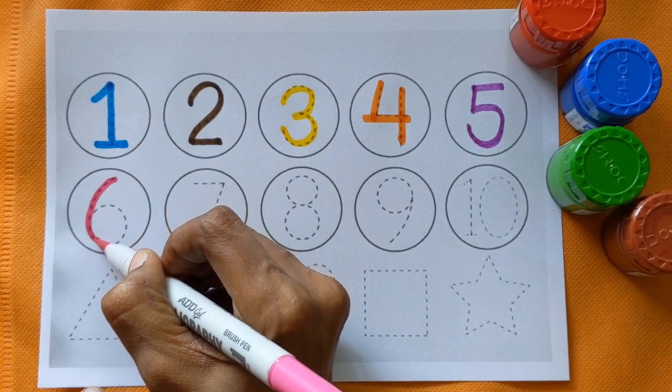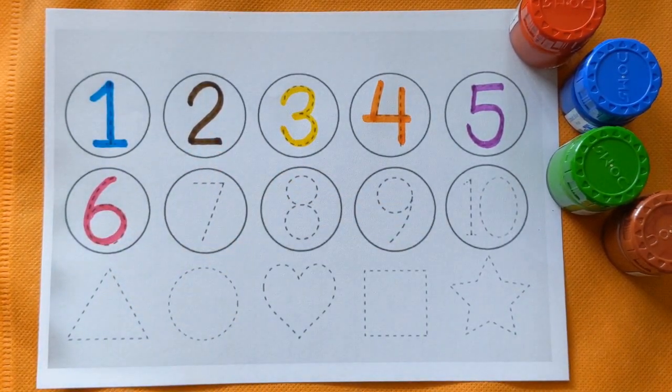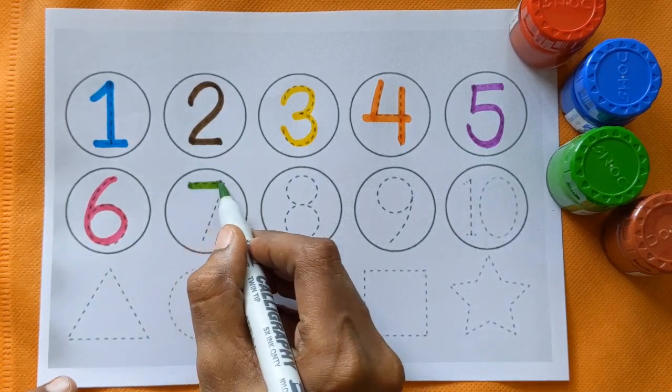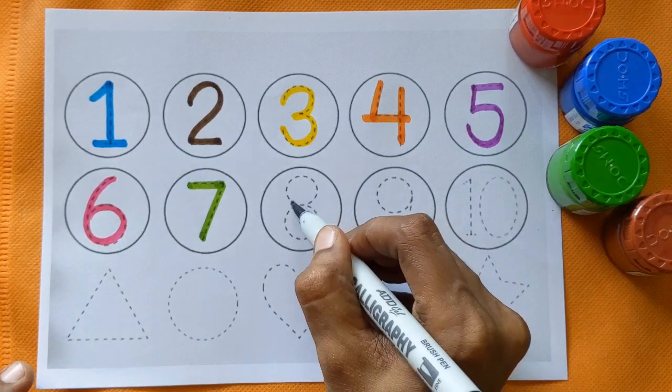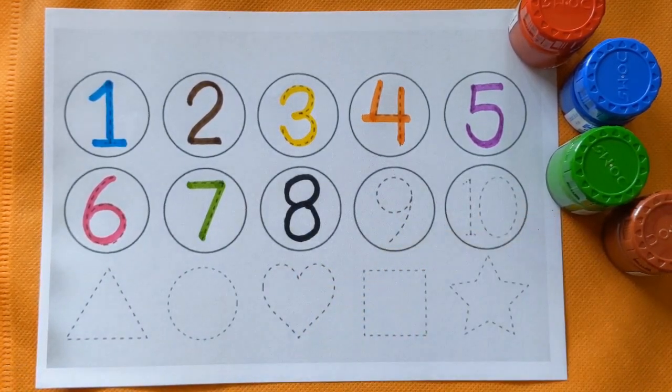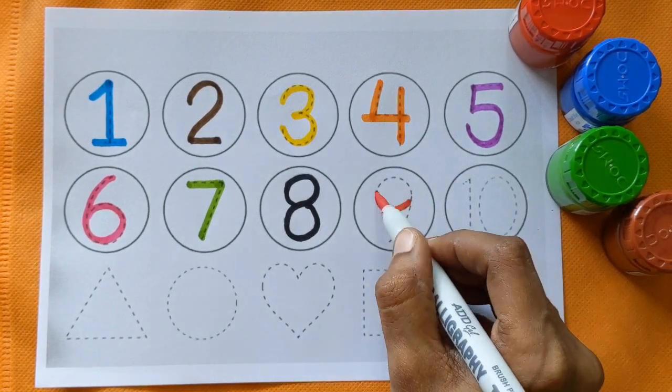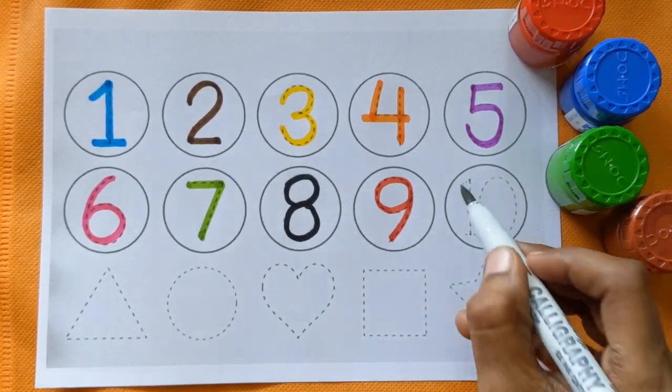After 5, which number is this? Can you tell me? It's a number 6, pink color. Next is 7, light green color, number 8, black color, 9, red color.